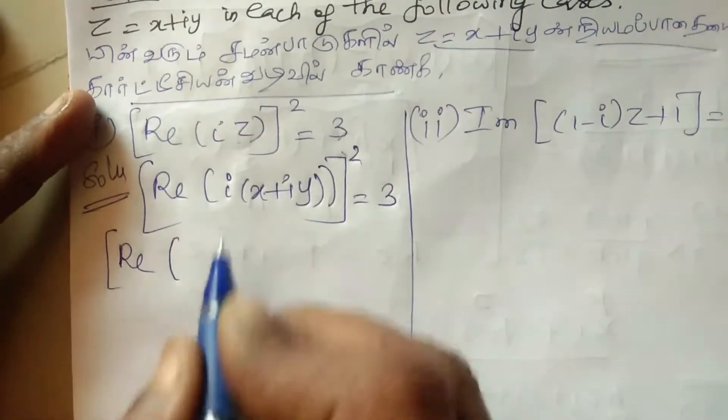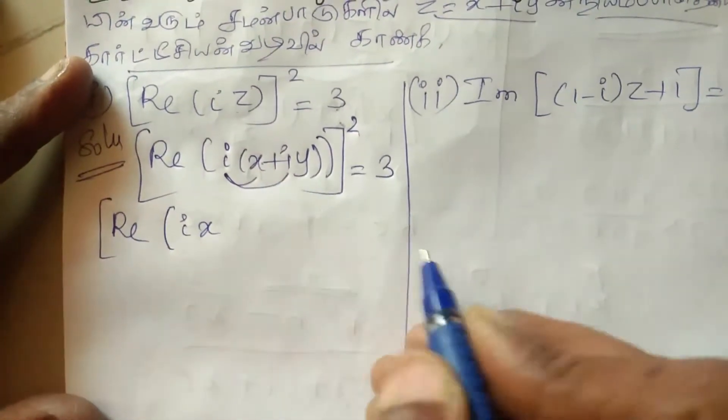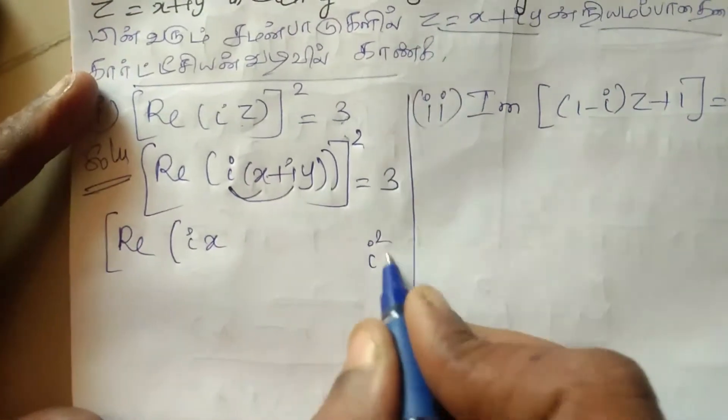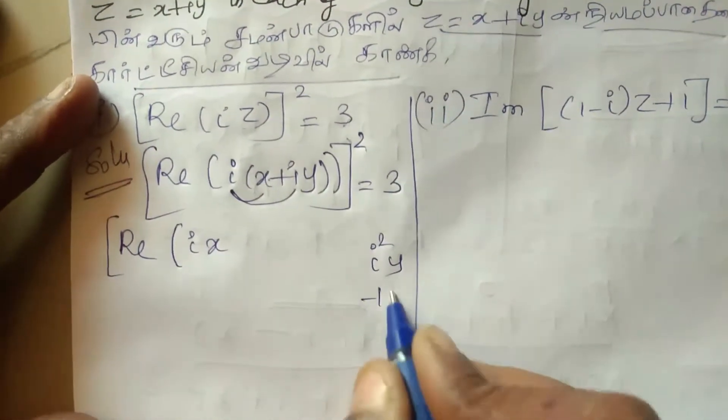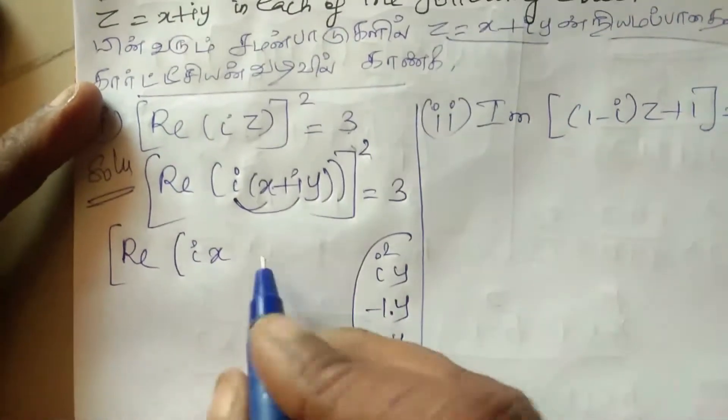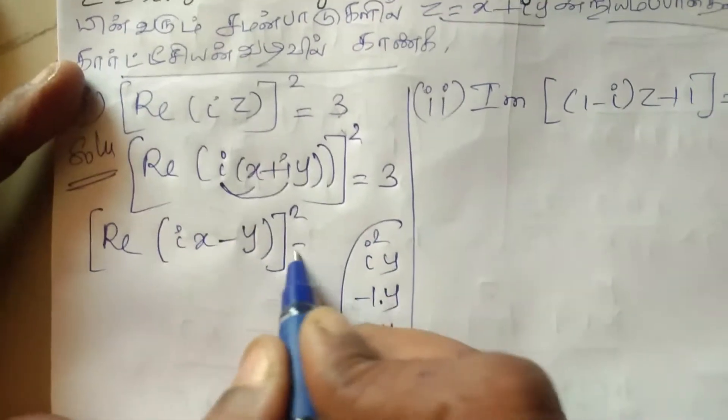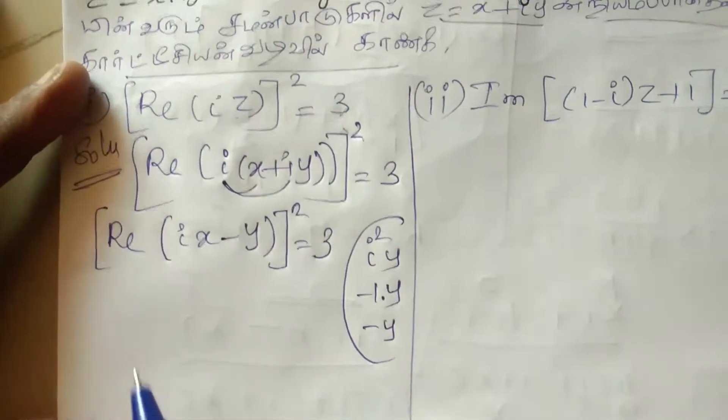So real part of I into X is IX plus I into IY is I squared Y. I squared value is minus 1, so minus Y. This gives IX minus Y the whole square equal to 3.